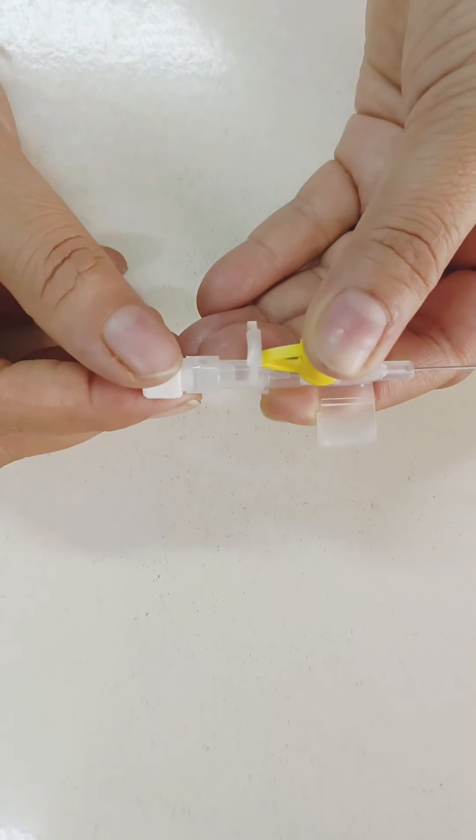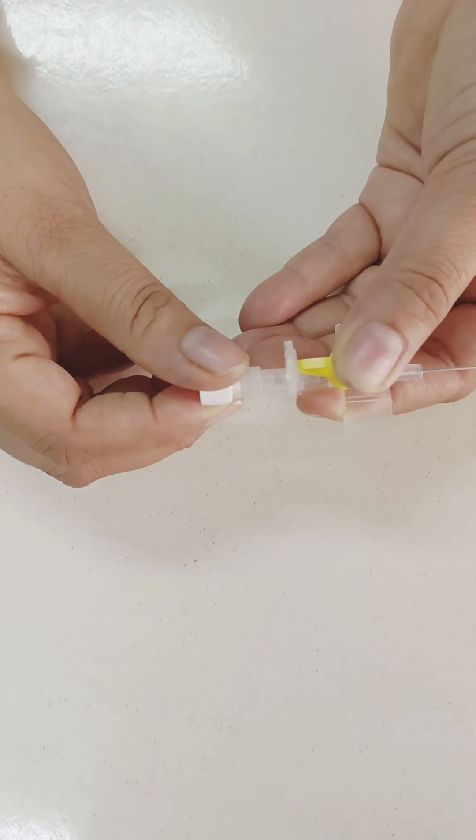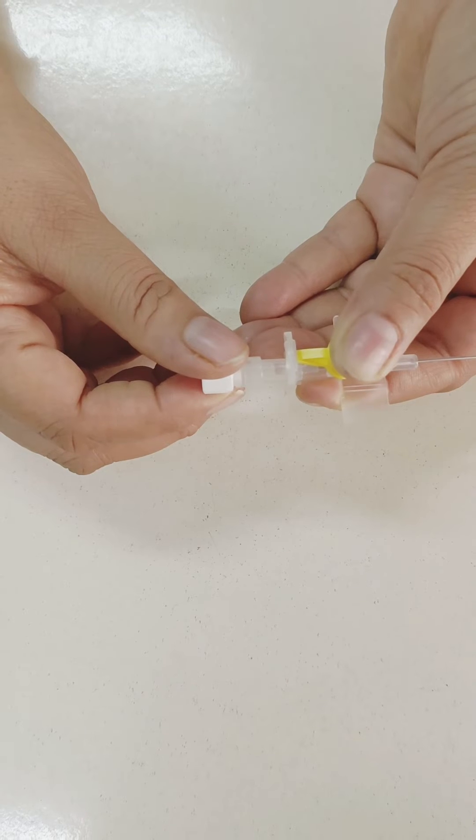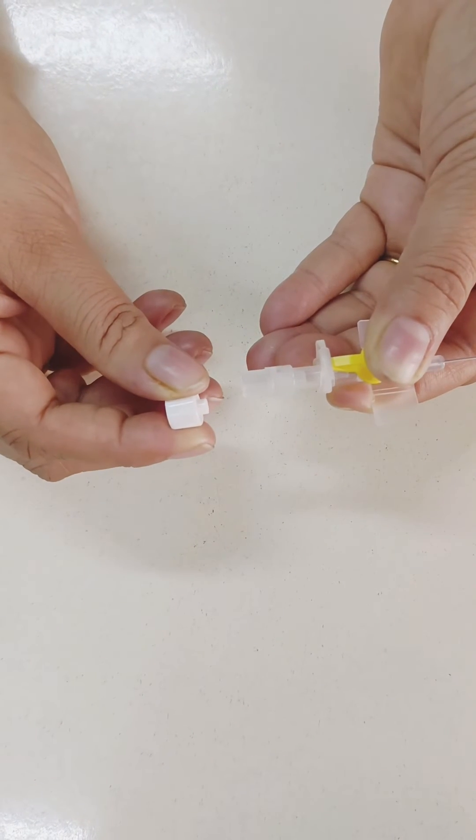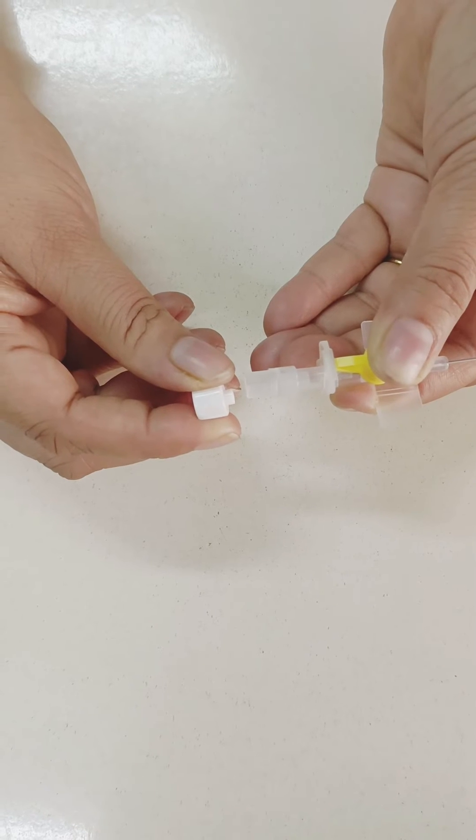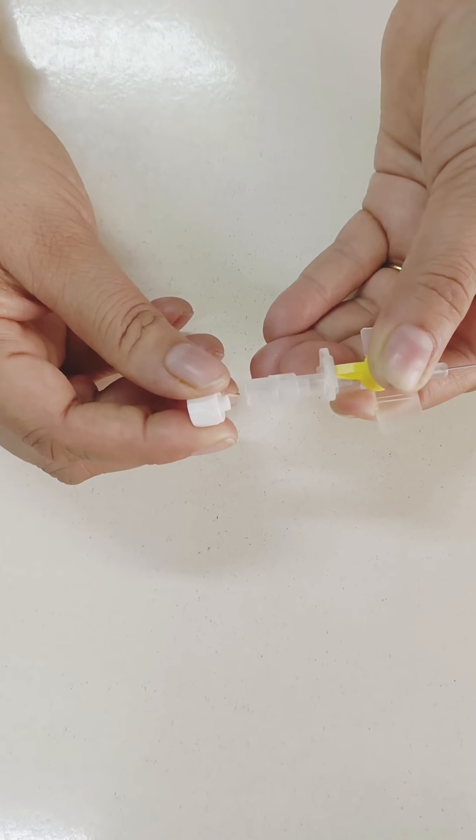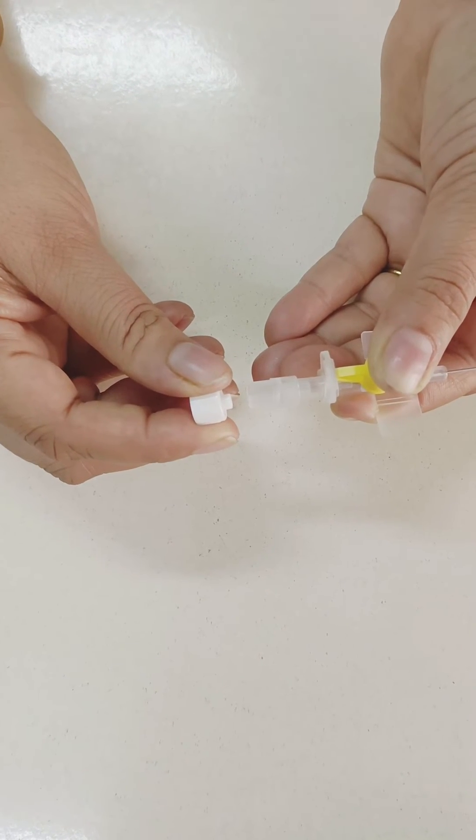This is lure lock plug. After proper insertion and fixation of intracath, this lure lock plug is removed to give IV injection or IV infusion.